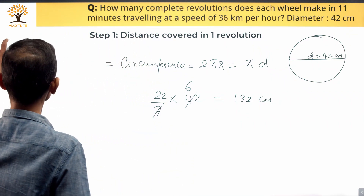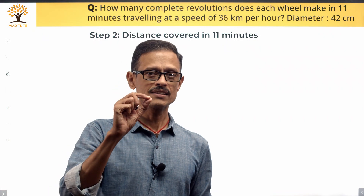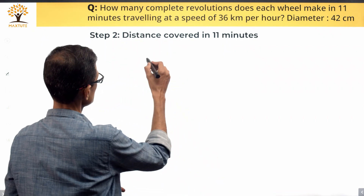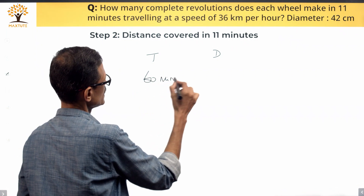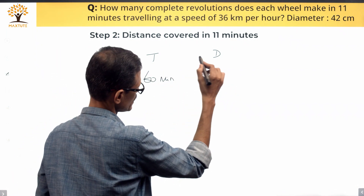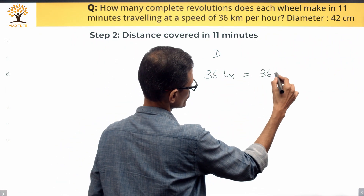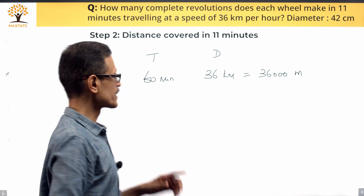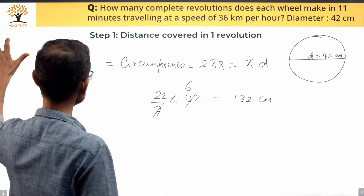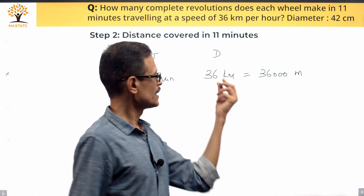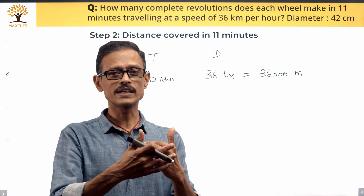Step 2: find the distance covered in 11 minutes. We know the distance covered in 60 minutes, which is 1 hour — that's 36 kilometers, which I'll write as 36,000 meters. Since the distance per revolution is in centimeters, we'll need a unit conversion later. I'm converting to meters first to keep things manageable.